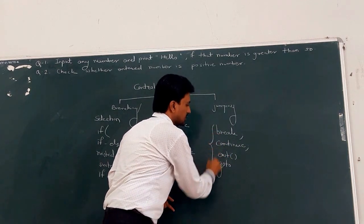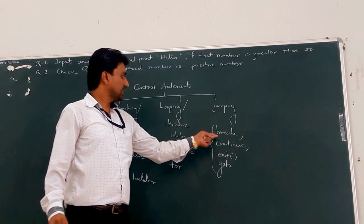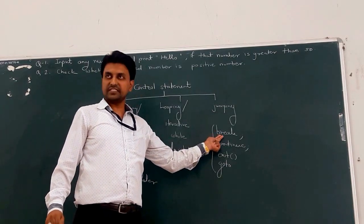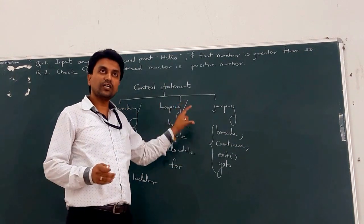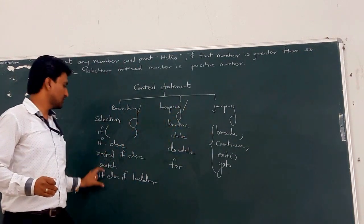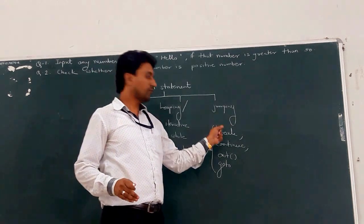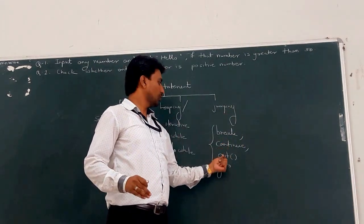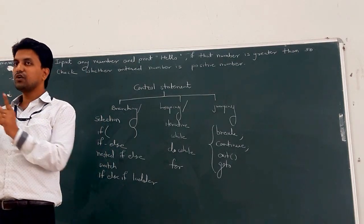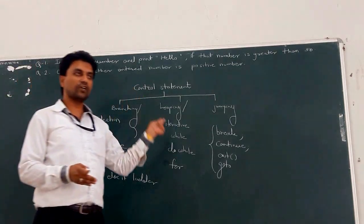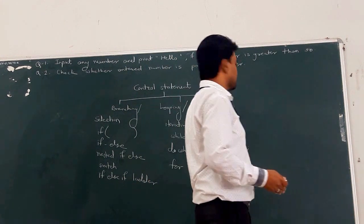All these statements are called jumping statements because when a break statement is there, we can break out of the current loop or current switch statement — this is a jump from one statement to another. Goto is also called unconditional jumping; depending only on a label, we can jump forward or backward in your code.